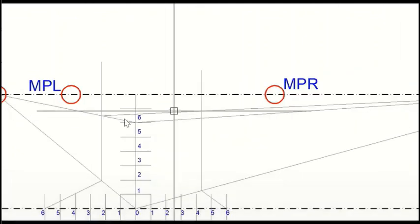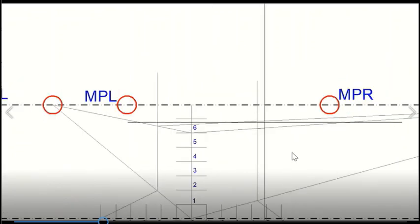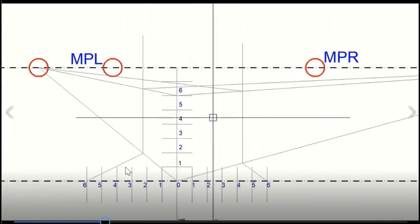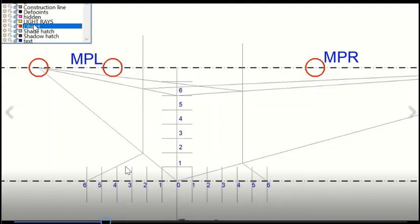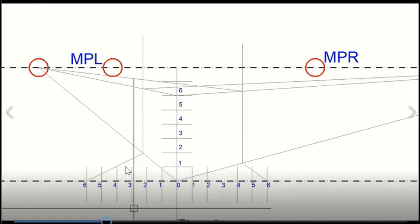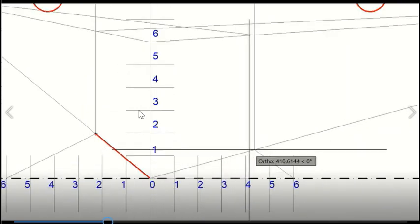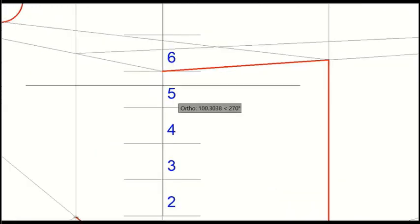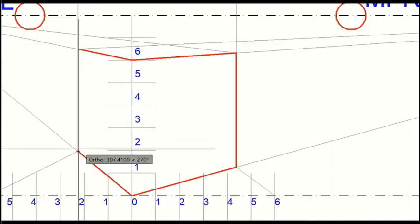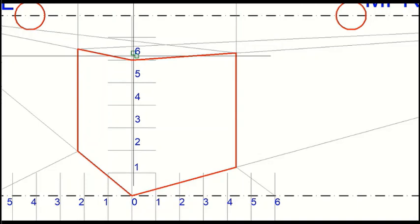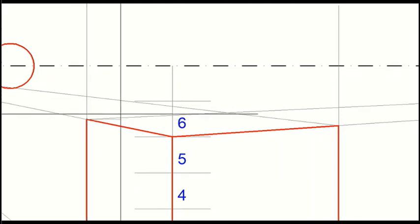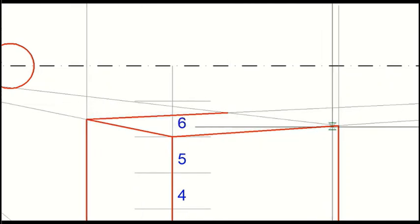For making the upper face, we will join this point to vanishing point right and this point to vanishing point left, and here this point to vanishing point right and this point to vanishing point left. We will get the cuboid using the measuring point method — these are the measuring points: measuring point left and measuring point right. By joining these points we get the upper face. The construction lines are now visible, and I will highlight the object using the object layer. Now the object is visible, made using the shortcut method.